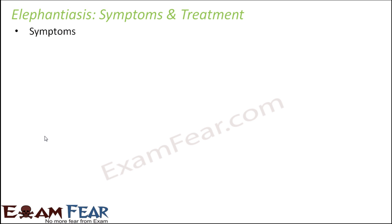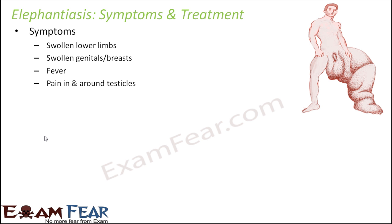Symptoms of Elephantiasis include swollen lower limbs — as visible in the picture — as well as swollen genitals or breasts, fever, and pain in and around the testicles. When the lower limb becomes so much swollen it becomes very difficult to move from one place to another.